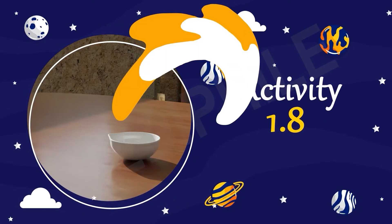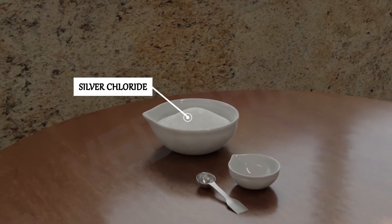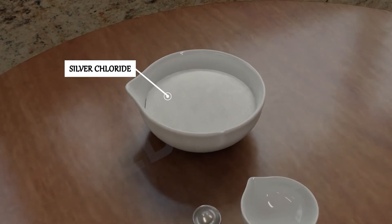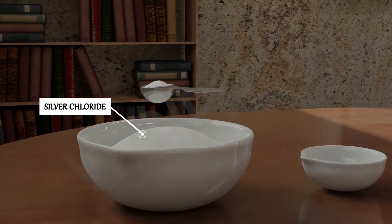Activity 1.8: Do you know this is silver chloride? The color of silver chloride is white. Take 2 grams of silver chloride in a china dish.